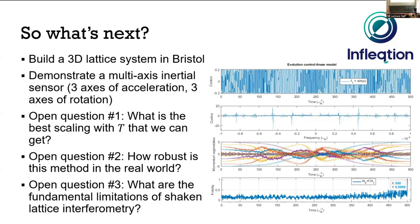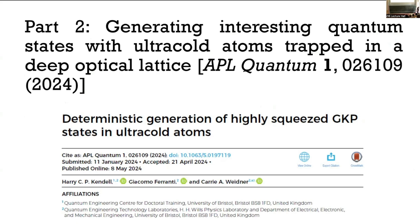Now with the next 15 minutes, let's talk about something we did because we thought it was fun, and we're not even sure it's going to be useful, but we did it because it was fun. This is some work on generating GKP states in ultracold atoms. This is work mainly done by my PhD student Harry Kandel, and our friend Giacomo, who's an expert in quantum optics. This is primarily a theoretical proposal, although we can do the experiment in the same system we have in the basement in Bristol, once we get that system working.